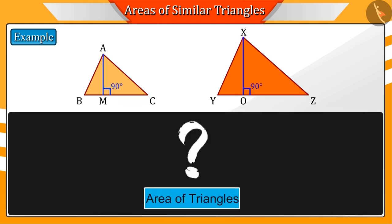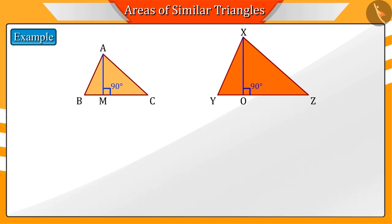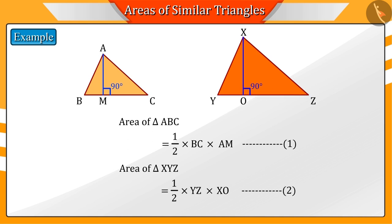Now, can you find the area of these two triangles? Correct. The area of triangle ABC is half multiplied by BC multiplied by AM. And the area of triangle XYZ is obtained by half multiplied by YZ multiplied by XO.